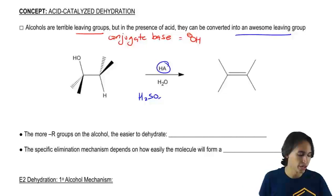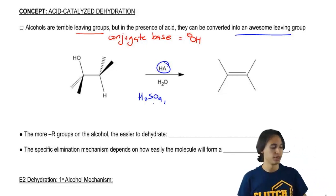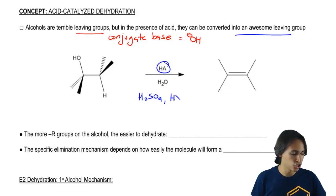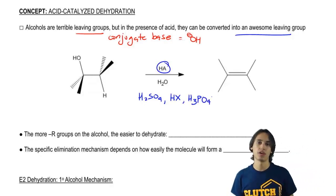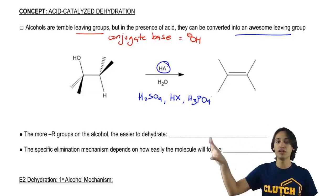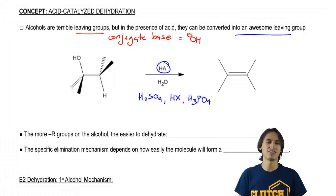So H2SO4 is seen all the time. Any of the hydrogen halide strong acids. I've also seen phosphoric acid, H3PO4. This is not really a strong acid, but it's still strong enough to make the reaction go. These are all very frequently used acids for acid-catalyzed dehydration.